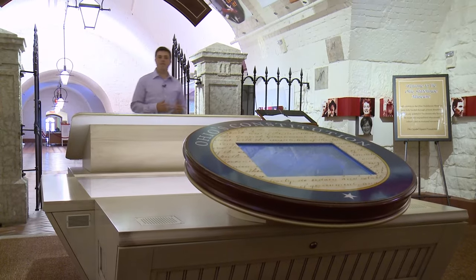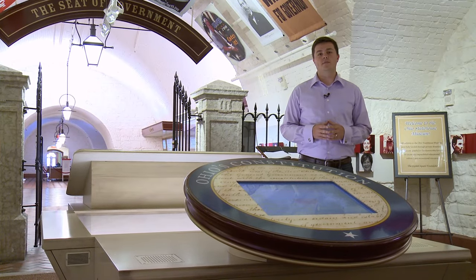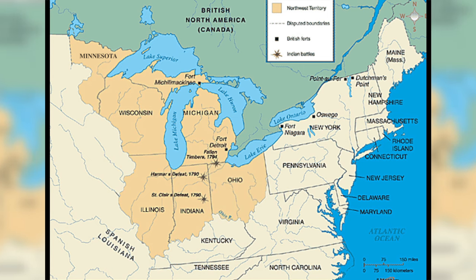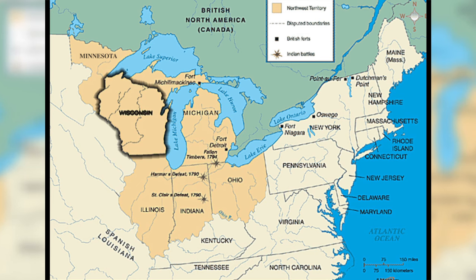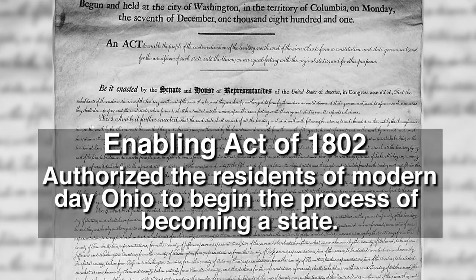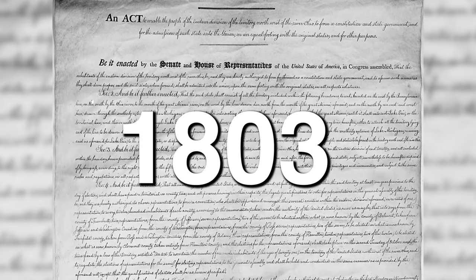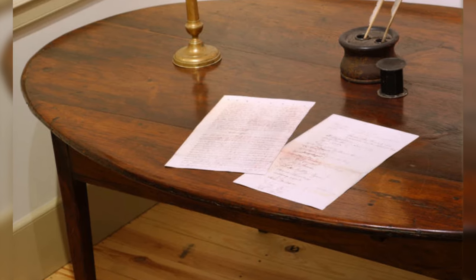First, let's talk about the events that led up to the formation of Ohio's first Constitution, the 1802 Constitution. Ohio was originally part of the Northwest Territory, established in 1787. Today, the lands of the former Northwest Territory hold six different states: Ohio, Indiana, Illinois, Michigan, and Wisconsin, as well as part of Minnesota. The first step towards statehood was the Enabling Act of 1802, which authorized the residents of modern-day Ohio to begin the process of becoming a state. In the early months of 1803, when the first Ohio Constitution was signed on this table, Ohio became the 17th state to join the Union.